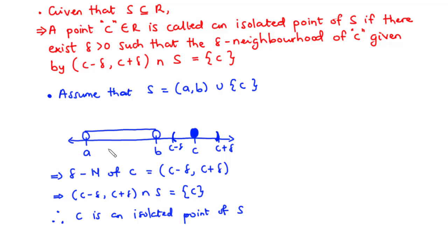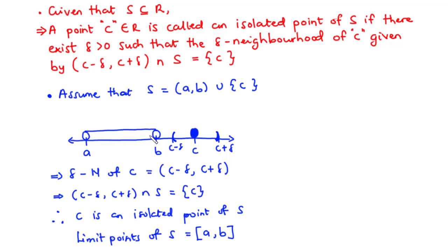If you watched the previous video on limit points, the limit points of this set S are given by the closed interval [a, b]. This is because for any point between A and B, including A and B, the intersection of the delta neighborhood of that point and S contains infinitely many points. Therefore, points in the closed interval [a, b] are limit points of S, while C is an isolated point of S.